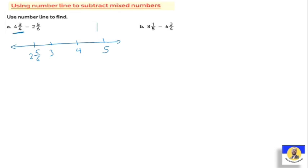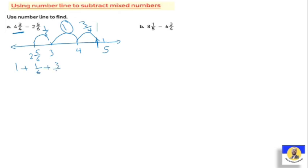Because five over six plus one over six equals six over six which becomes one whole, turning into three. Then from three to four is one more whole. From four to four and three quarter, we add just three quarter. So the total jump is one plus one over six plus three over four.